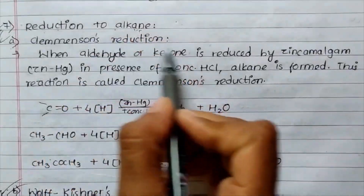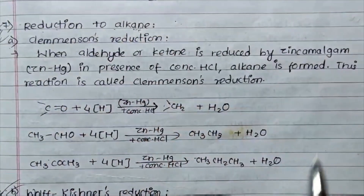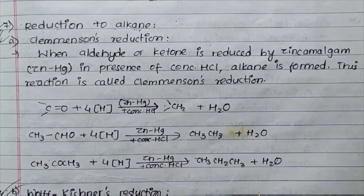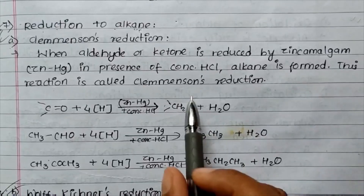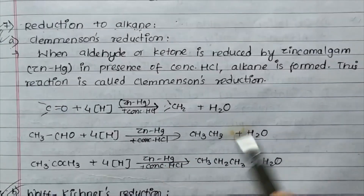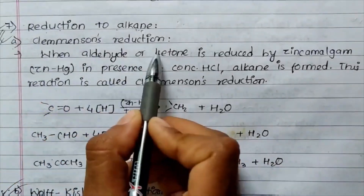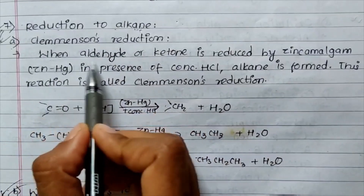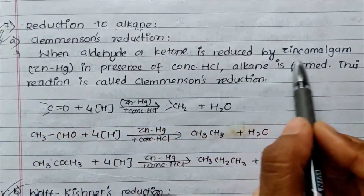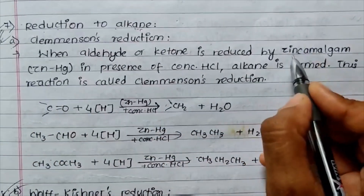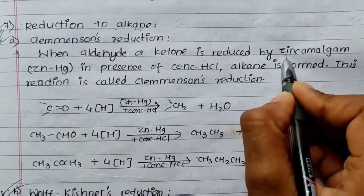The same thing is Clemmensen reduction, and Wolf-Kishner reduction. What is the Clemmensen reduction? When aldehyde or ketone is reduced by zinc amalgam.